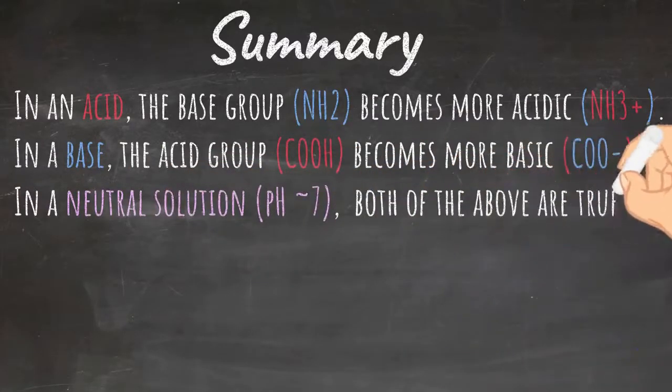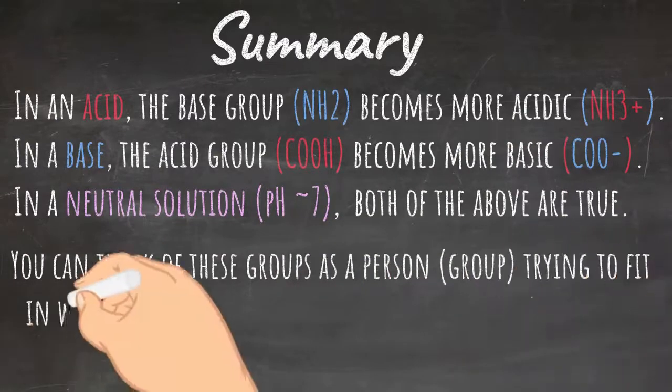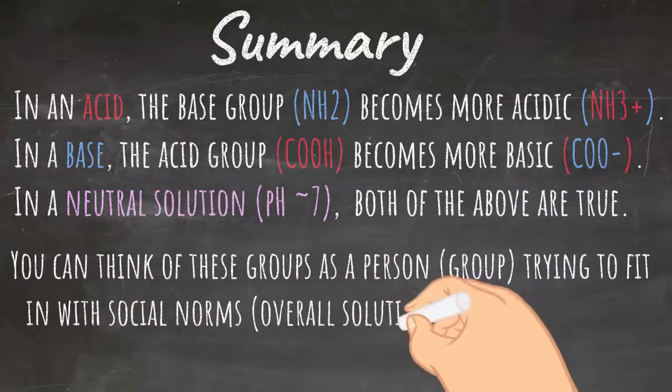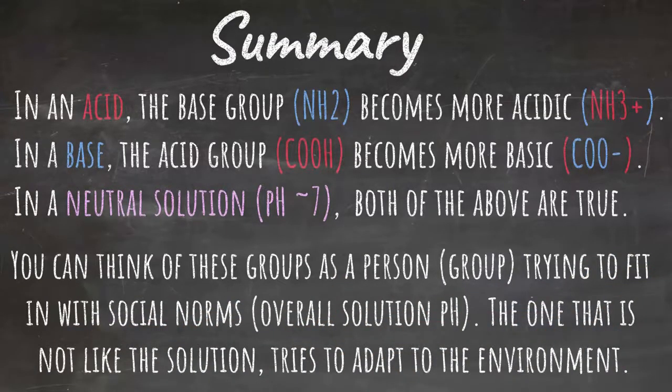In a neutral solution, around pH of 7, both of the above are true. You need to remember this by thinking of these groups as a person trying to fit in with social norms. The person would be the group, and social norms would be the overall solution pH. The group that is not like the solution tries to adapt to the environment.